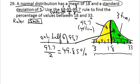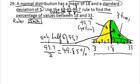So you take half of 99.7% and calculate that in your calculator, and you end up with 49.85%. That was what they were asking for — the percentage of values between 18 and 33 is half of 99.7%, which equals 49.85%.